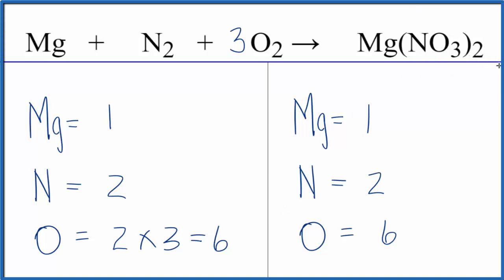This is Dr. B with the balanced equation for magnesium plus nitrogen gas plus oxygen gas yields magnesium nitrate. Thanks for watching.